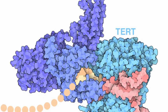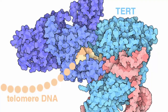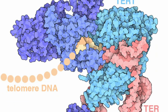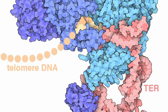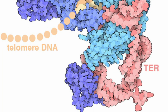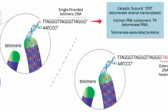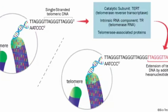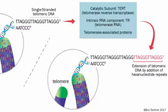Telomerase is capable of maintaining the length of telomeres by addition of guanine-rich repetitive sequences. Telomerase is a ribonucleoprotein, which means it consists of both protein and RNA components. The protein component, called telomerase reverse transcriptase or TERT, functions as the enzymatic component, and the RNA component is known as telomerase RNA or TR. TR contains a template sequence that is complementary to the telomeric repeat sequence — for example, TTAGGG in humans.